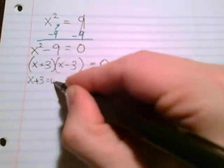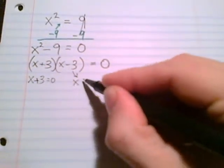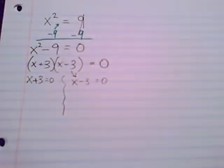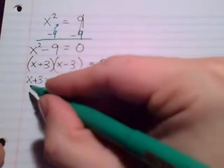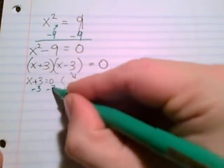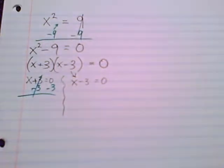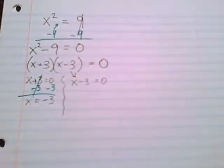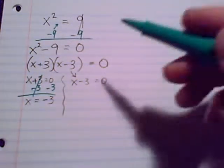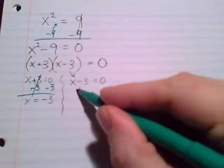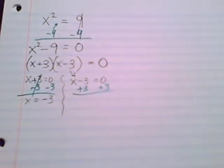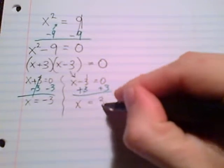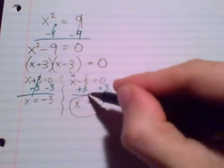X plus three equals zero, x minus three equals zero. There are those two linear equations, and we'll solve them. Take away three on both sides—that's giving us x equals negative three. This other equation is x minus three, so let's cancel that minus three with plus three both sides. And there are our two solutions.